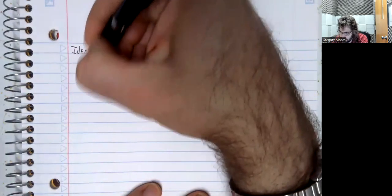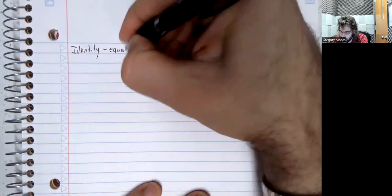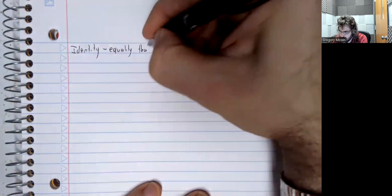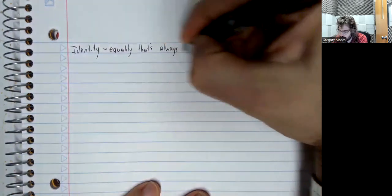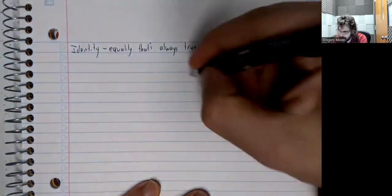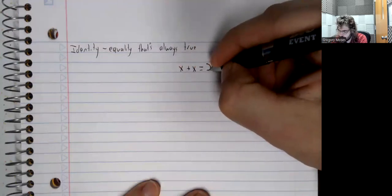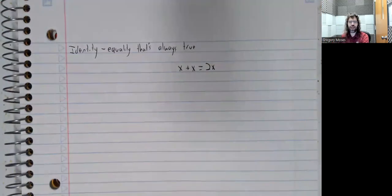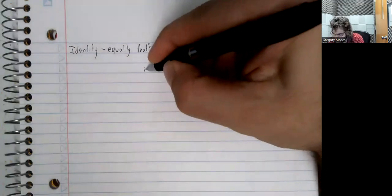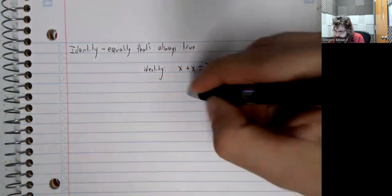So let's remind ourselves, or maybe introduce it if you haven't seen this terminology before. An identity is an equality that's always true. So something like x plus x equals 2x. This is always a true statement. There is no value of x that would make this false. This is an example of an identity.